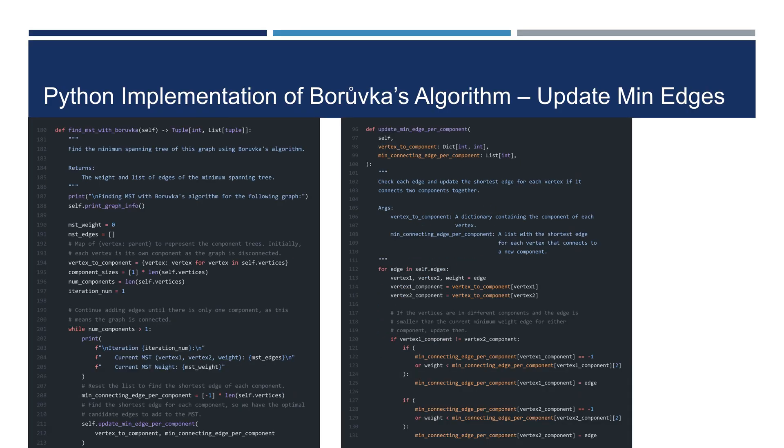The algorithm iterates through a while loop on line 201 until there's only one component left. At the start, it searches for the minimum edge per vertex, calling the method on line 211, which is shown on the right. It iterates through edges and checks whether the edge connects two different components on line 120. If so, it updates the minimum edge if either the component has no edge recorded, or if the current edge is shorter than the edge recorded for that component.